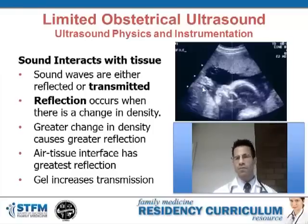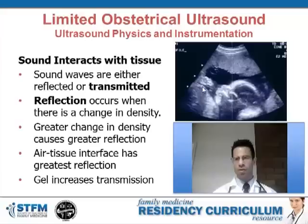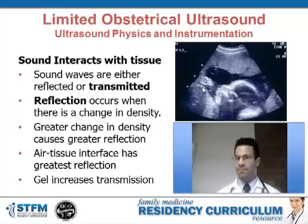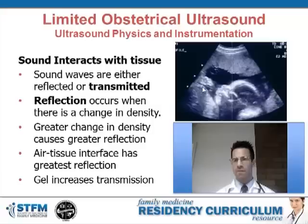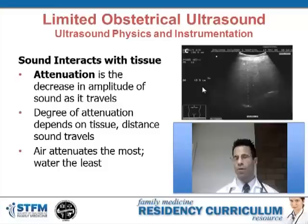The reason we use gel when doing ultrasound is to decrease the reflection that occurs when sound waves leave the transducer and pass through air into the skin. The air-skin interface involves extremely differing densities — air is much lower density — so there is a lot of reflection unless we eliminate the air that would otherwise be between the probe and the skin.